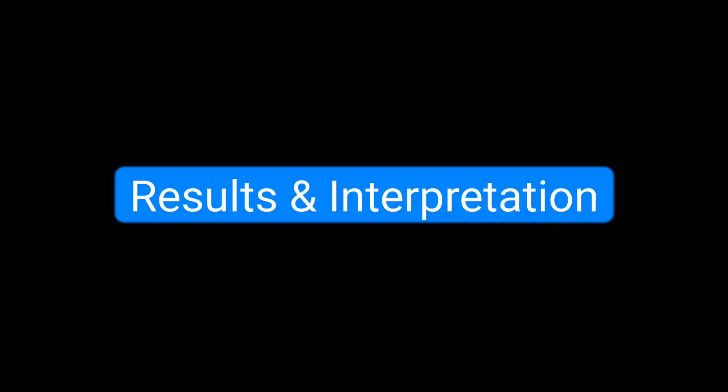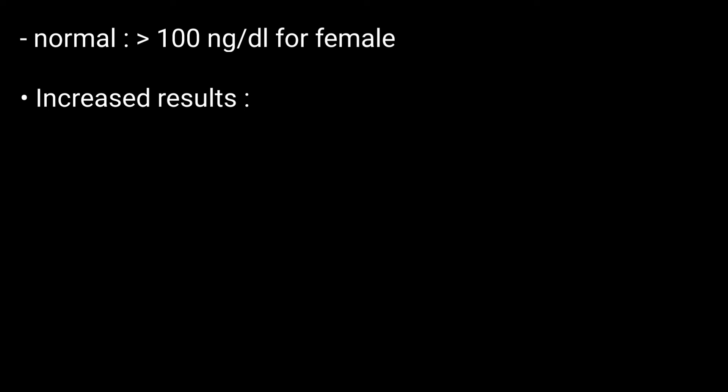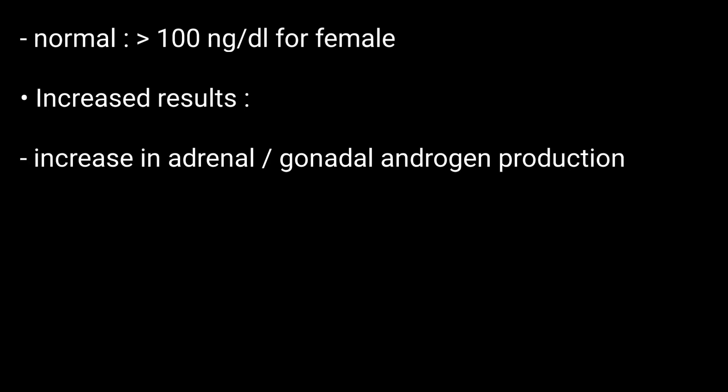Results and interpretation: Normal values are more than 100 ng per deciliter for females of all age groups. Increased results indicate an increase in adrenal or gonadal androgen production, adrenal tumour, or PCOS. This was all. Thanks for watching.